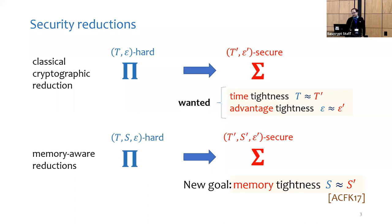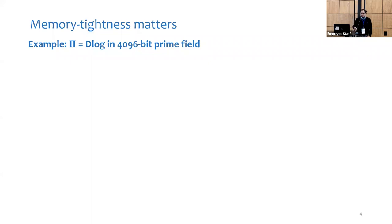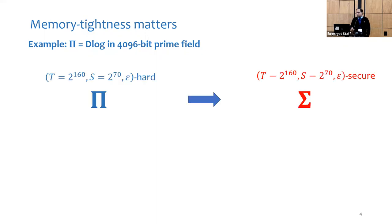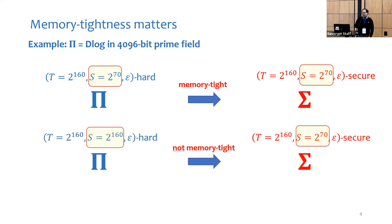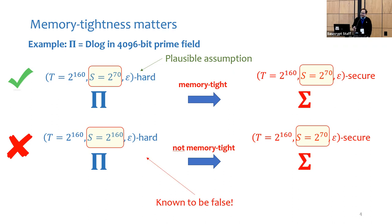Why do we care about memory tightness? Consider the hard problem π to be the discrete logarithm problem in a 4096-bit prime field, and consider two scenarios: one where a scheme σ has a memory-tight reduction to π, and another where the reduction is not memory tight. In the former case, say we need security against adversaries running in time 2^160 using memory 2^70 — the required guarantees for π are plausible. In the latter case, the guarantees needed for π are known to be false due to existing attacks, so the reduction gives us no security guarantees at all.